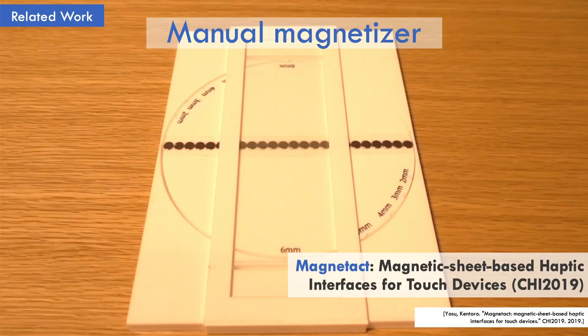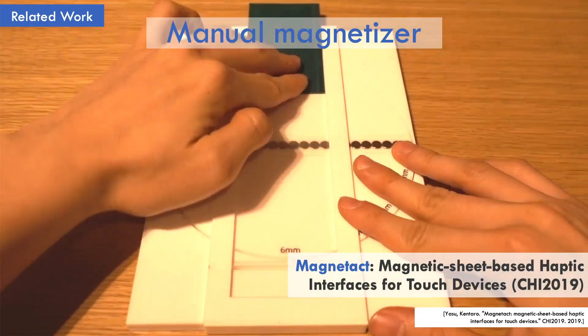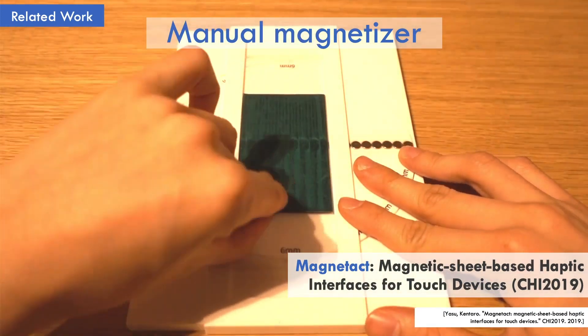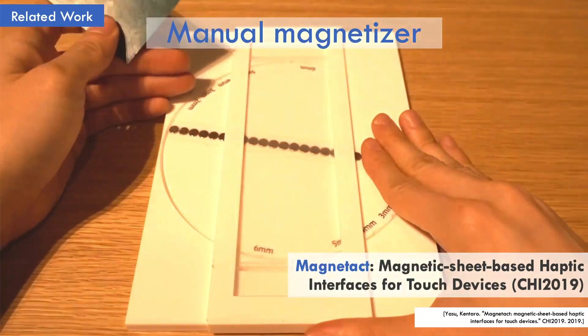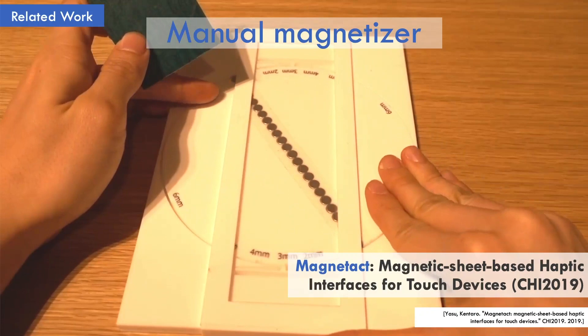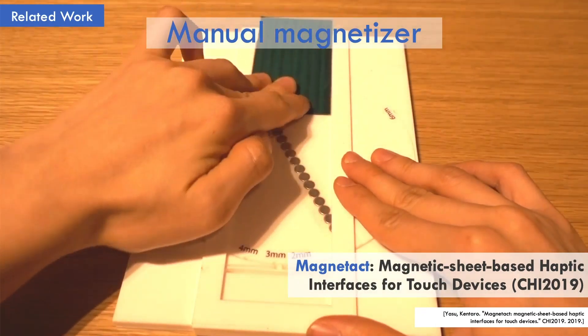Meanwhile, this manual magnetizer we developed last year can quickly magnetize simple stripes of magnetic polarities. When the magnetic sheet is held down and straight over the magnetizer, a stripe pattern can be magnetized. Further, by turning the center disk, the pitch of the stripe can be changed.